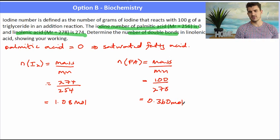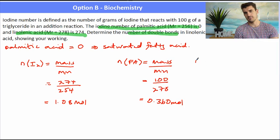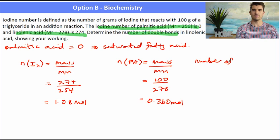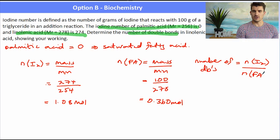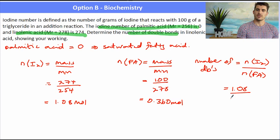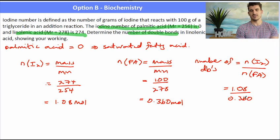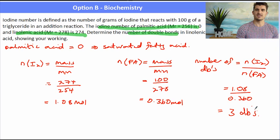Now we do a little bit of a trick. To work out the number of double bonds, it's the number of moles of iodine divided by the number of moles of the fatty acid. We're just setting up a ratio. What is the ratio between these two things? When you plug in those numbers, you see that the ratio is three. Three moles of I2 needed for every one mole of fatty acid, which means that this molecule has three double bonds.